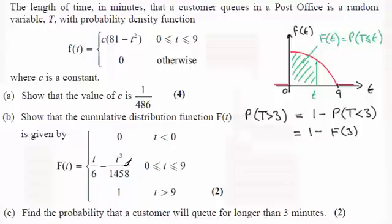And we take this value here because three is in this interval, and we see that that's going to be one minus, and then we've got when t equals three here, we've got three over six, three-sixths, and then minus three cubed over one thousand four hundred and fifty-eight. So three cubed then over one thousand four hundred and fifty-eight.